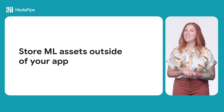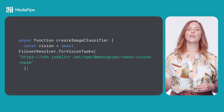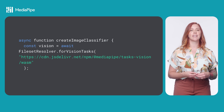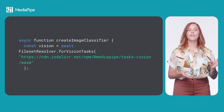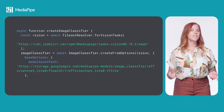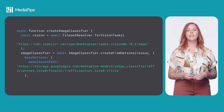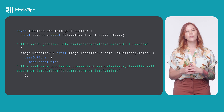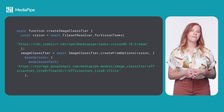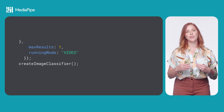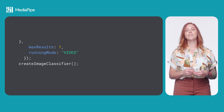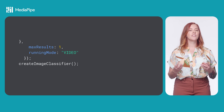Here we have a function, CreateImageClassifier. First, we configure our WASM binary loading using the FilesetResolver for VisionTasks method. Then we create the ImageClassifier using the ImageClassifier CreateFromOptions method, passing in the FilesetResolver you just created and the model. You can also provide optional parameters, like the maximum number of results the model should return when running inference, and the running mode for inference, which is either image or video. Image is the default value.